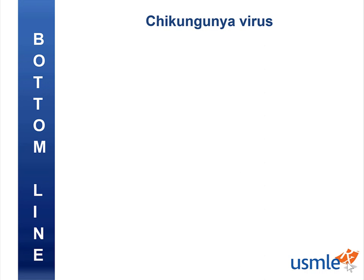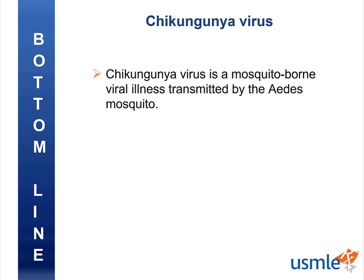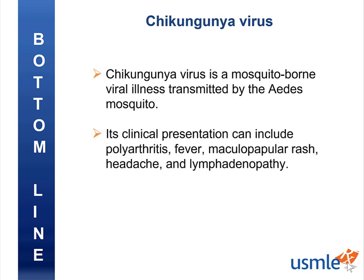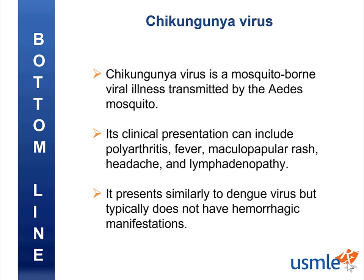So what's the bottom line? Chikungunya virus is a mosquito-borne viral illness transmitted by the Aedes mosquito. Its clinical presentation can include polyarthritis, fever, maculopapular rash, headache, and lymphadenopathy. It presents similarly to dengue virus, but typically does not have hemorrhagic manifestations. Please give this video a thumbs up if you liked it, and submit a comment if you have any feedback or questions. Thanks for joining me — study hard!